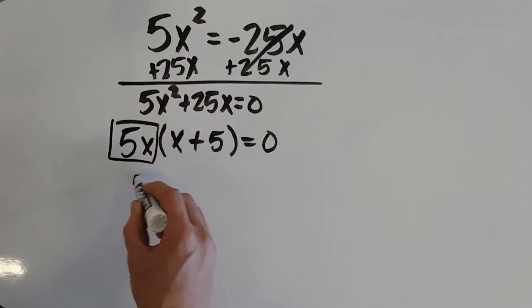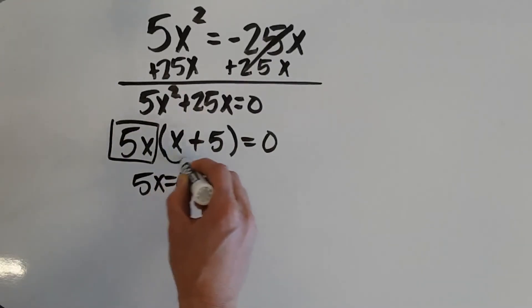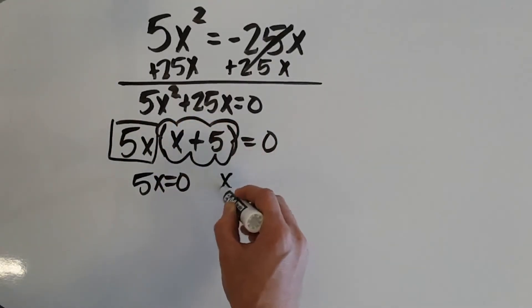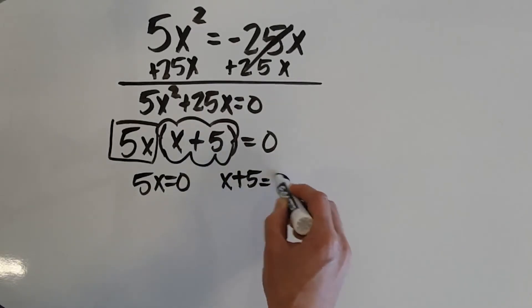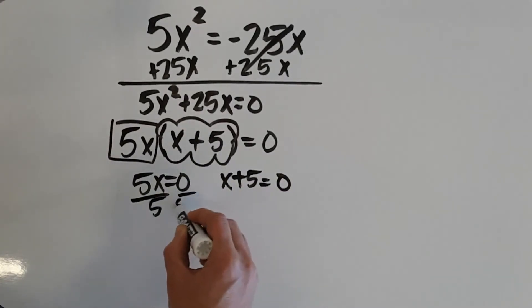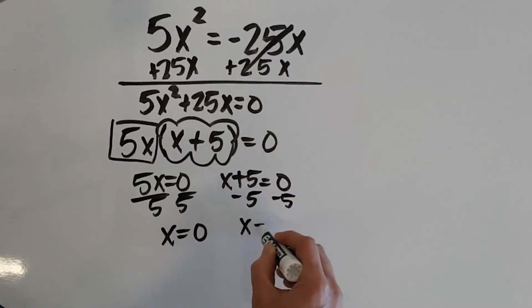If I have 5x equals 0, and then x plus 5, my other factor equal to 0. When I solve both of these, I get x equals 0, and x equals negative 5.